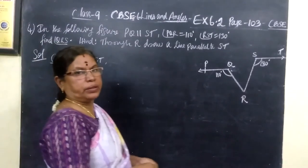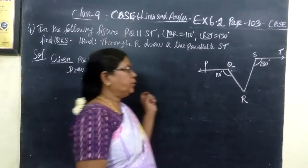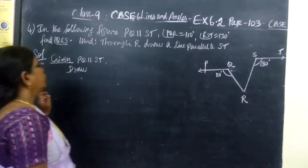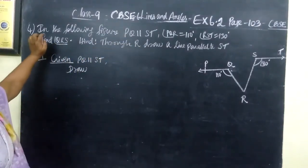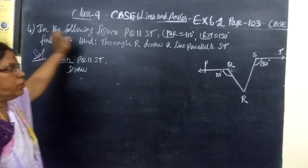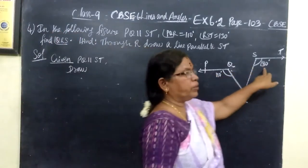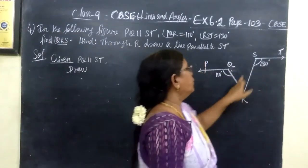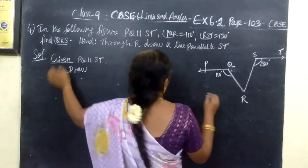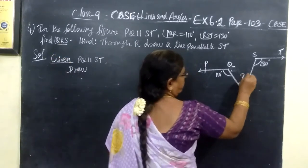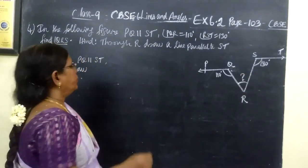We are now looking at Exercise 6.2, Question number 4. In the following figure, PQ is parallel to ST. Angle PQR is 110 degrees and angle TSR is 130 degrees. We want to find angle QRS.